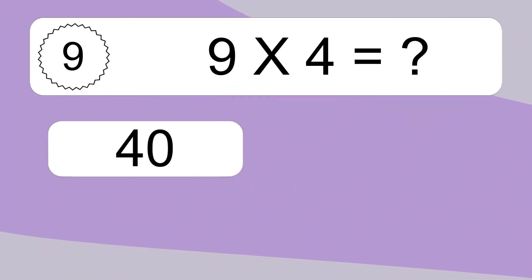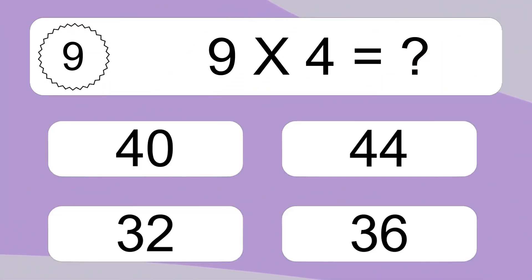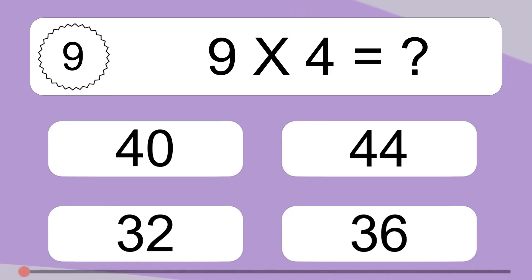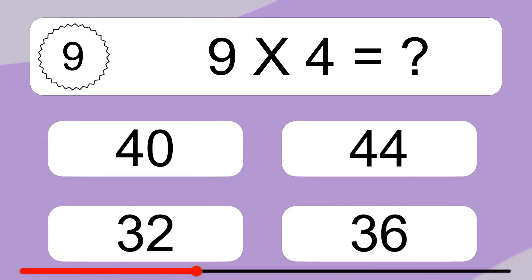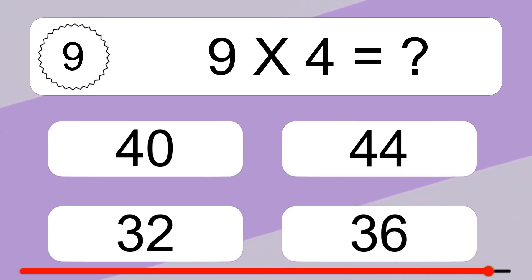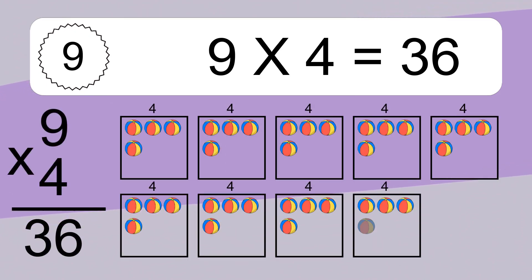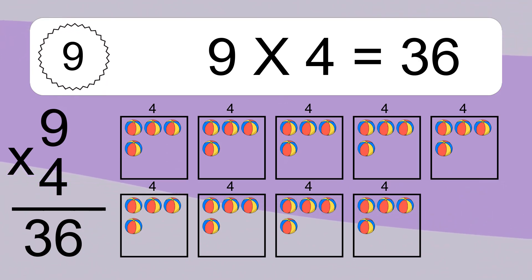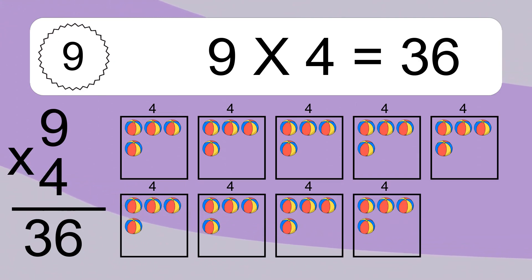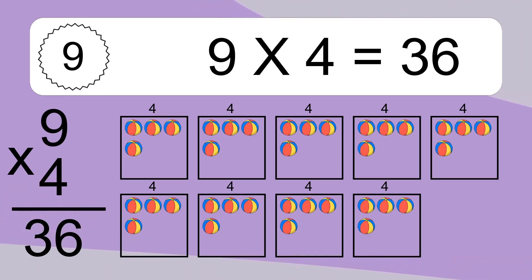9 times 4 equals what? 9 times 4 equals 36. We have 9 boxes and each box has 4 colorful balls inside. If you count all the balls in all the boxes together, you will have 9 times 4 balls. This equals 36 balls.